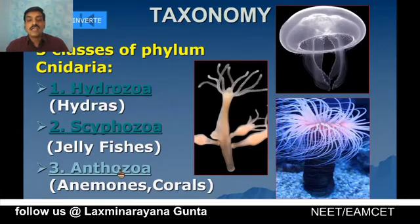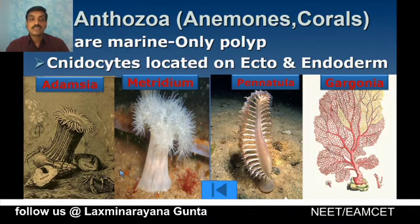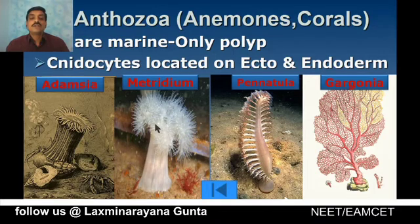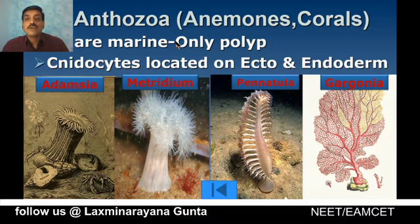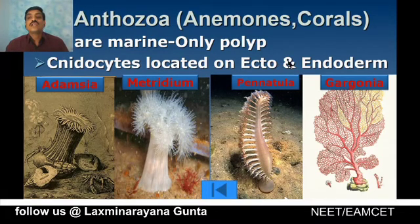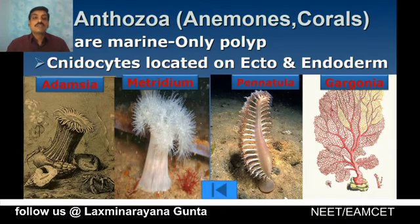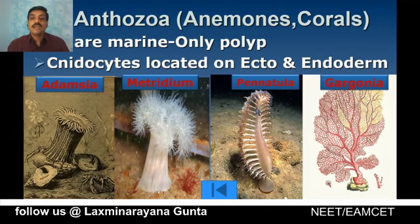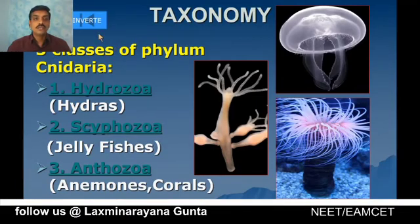Anthozoa includes sea anemones and corals. All are marine. Only polypoid forms are observed — in Scyphozoa all are medusoid, in Anthozoa all are polypoid, while in Hydrozoa both polyp and medusoid forms exist. Cnidocytes are located on ectoderm and endoderm. Examples include Adamsia, Metridium, Pennatula, and Gorgonia. Pennatula is also called the sea-pen and Gorgonia is called the sea-fan.